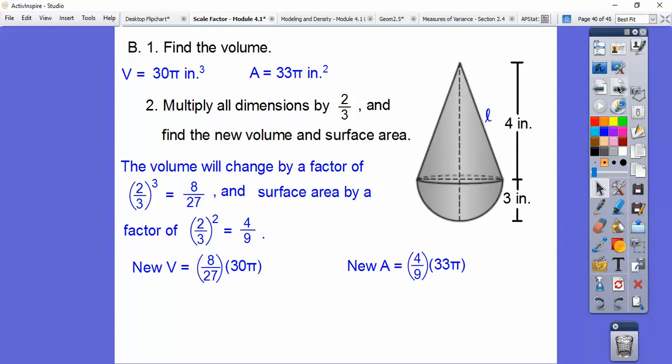So volume is 8 27ths. 9 goes into 27 nine times. It goes into 30 ten times. Now we just multiply. 8 times 10 is 80 pi over 9. So the volume is going to be 80 pi over 9 inches cubed. And the surface area, 3 goes into that 3 times, into that 11 times. Let's cancel those. We get 4 times 11 is 44 pi over 3, and this is going to be inches squared.